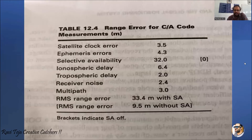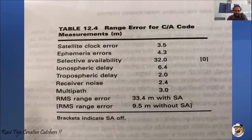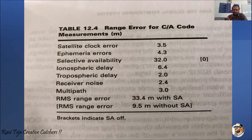The range errors for C/A code measurements in meters are as follows: satellite clock error is approximately 3.5 meters, ephemeris errors are approximately 4.3 meters, selective availability is 32 meters, ionospheric delay is 6.4 meters, tropospheric delay is 2.0 meters, receiver noise is 2.4 meters, and multipath errors are 3 meters. All these values represent the error range with respect to C/A code measurements.